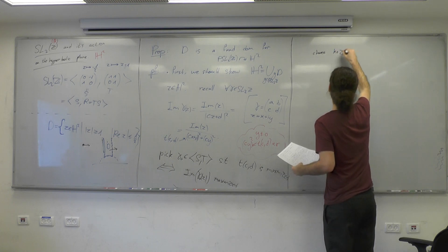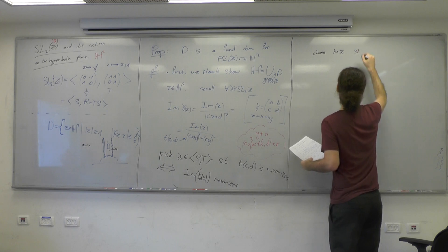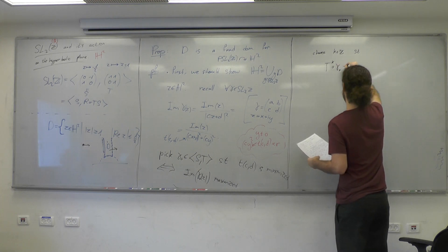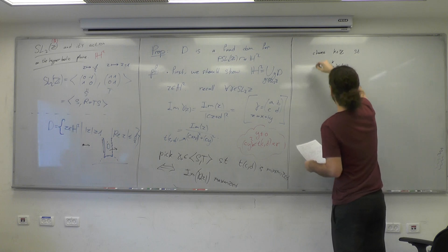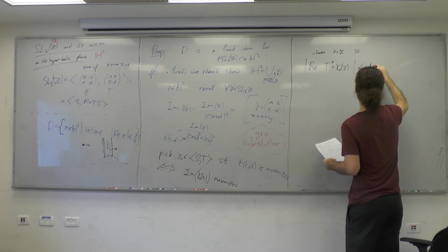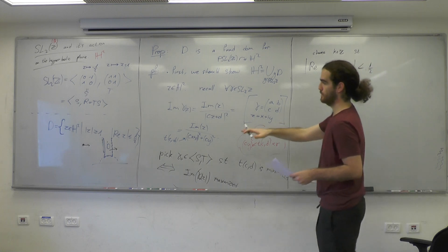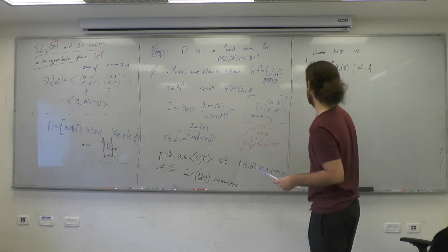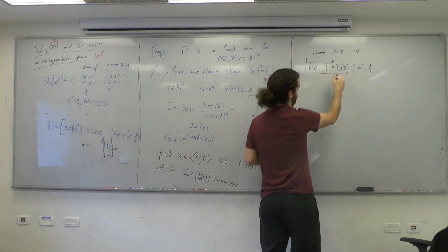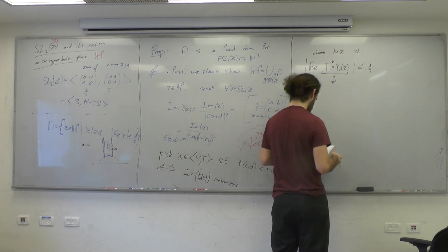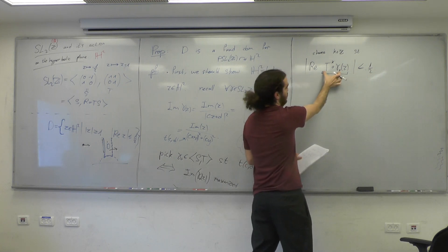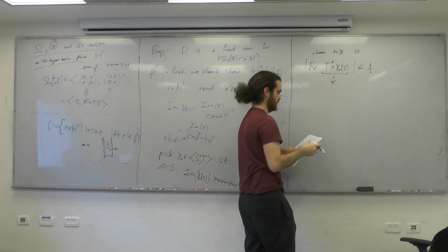Choose K in the integers such that the translation by K of gamma zero of Z has real part between minus half and half. Denote this point by Z prime. We claim this is the gamma that we want — let's understand why.